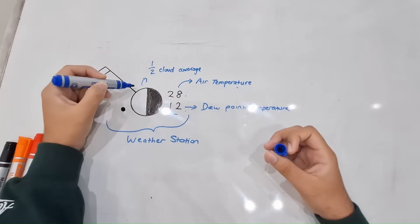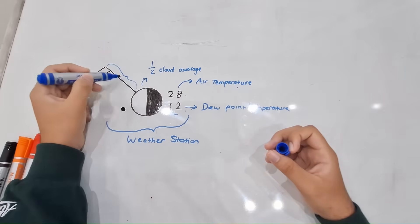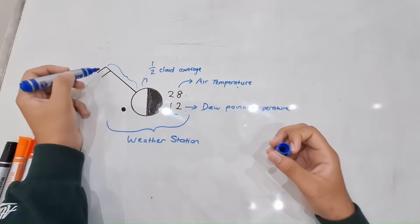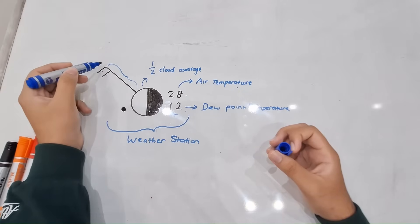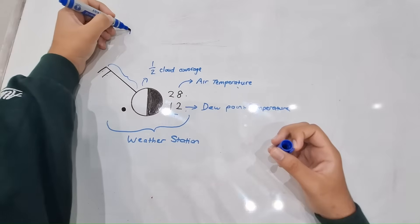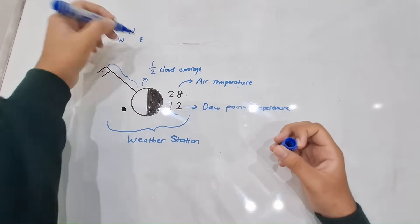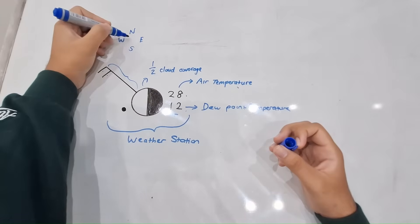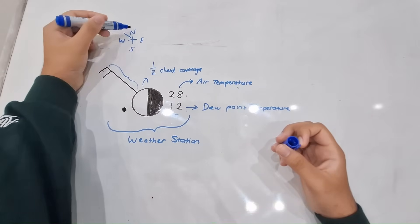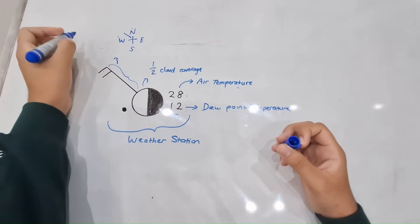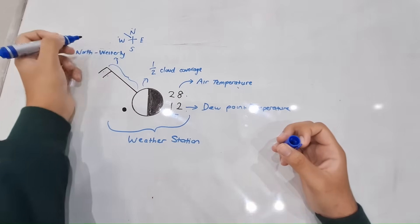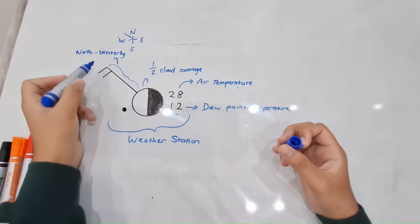Next let's look at this long line here. This line will show you the direction of the wind. A lot of students make the mistake of looking at the two small lines and saying that indicates the direction — it does not. That shows wind speed. Drawing a simple compass, we can see this direction is north-westerly, so the wind direction will be north-westerly.